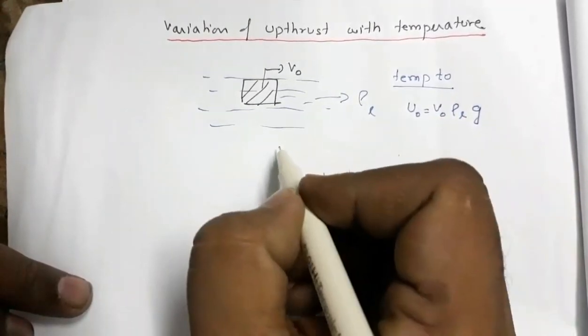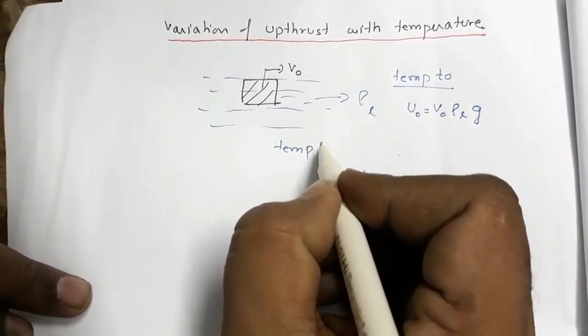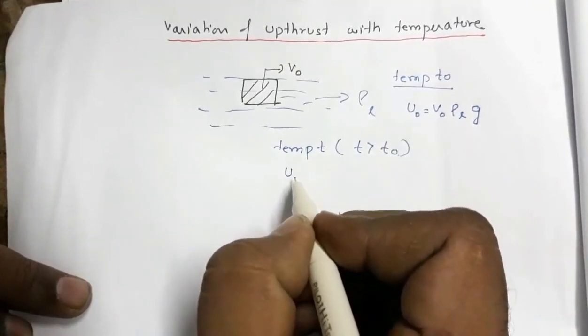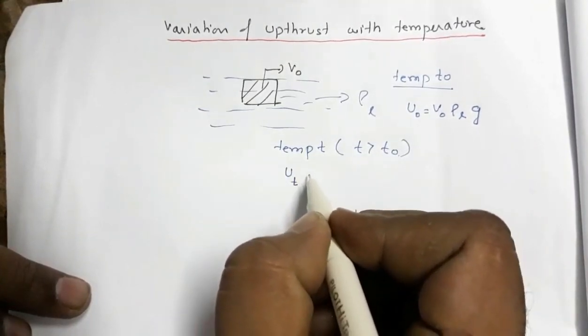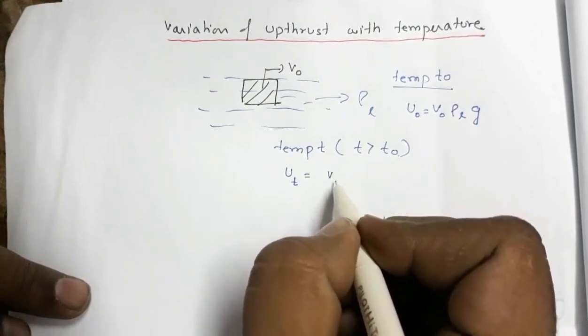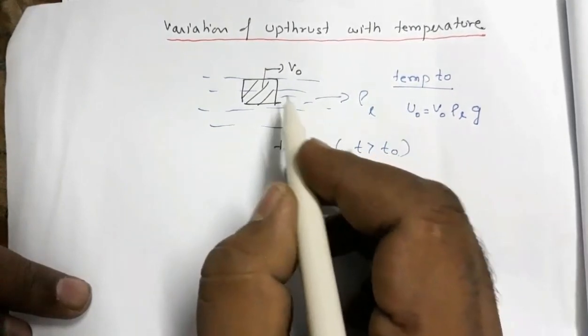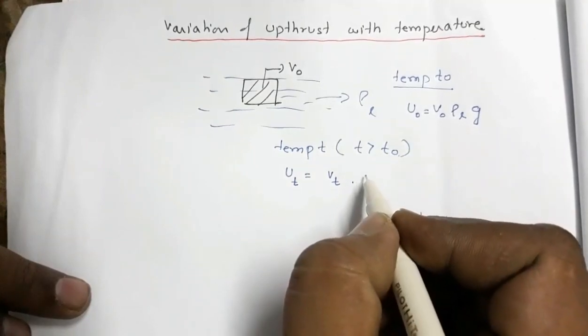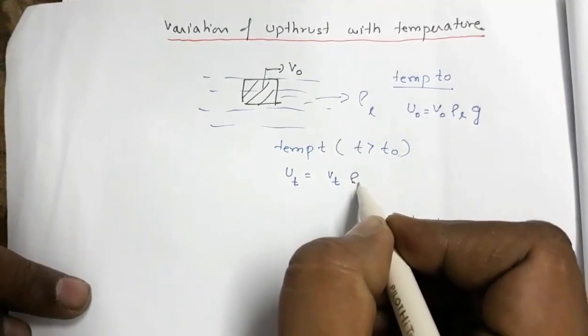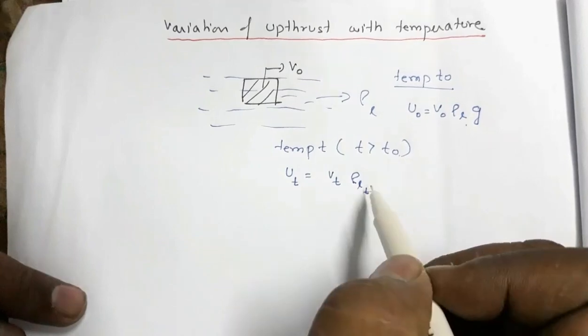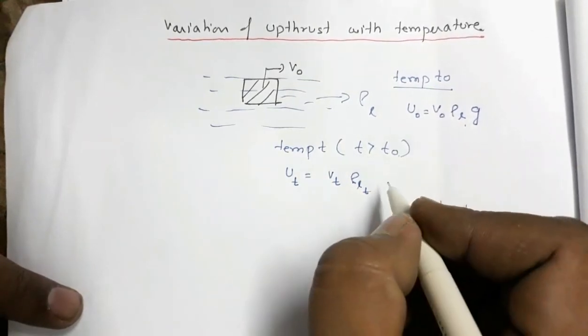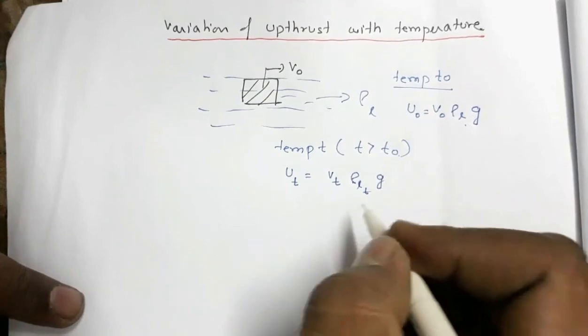Now suppose the temperature is increased to T. This T is greater than T0. So what will be the upthrust? UT, this upthrust at temperature T is equal to VT. This V0 becomes VT. This ρL becomes ρLT. So this is the density when temperature is increased from T0 to T, into G.